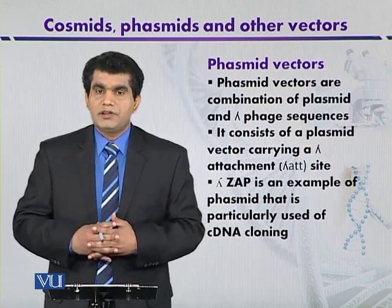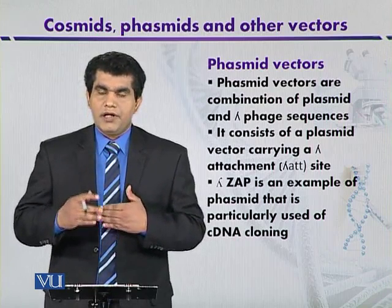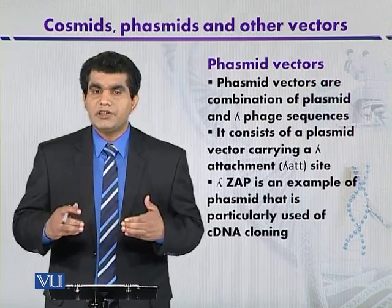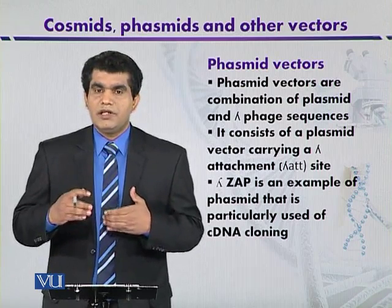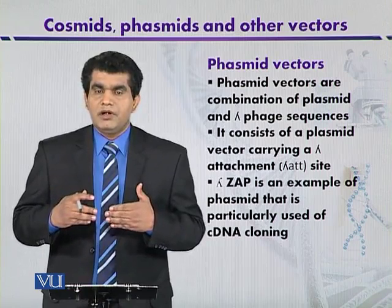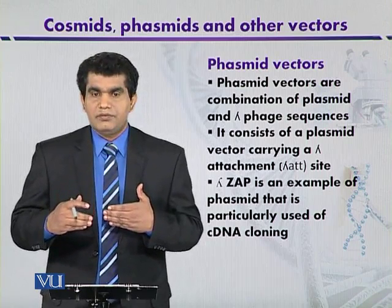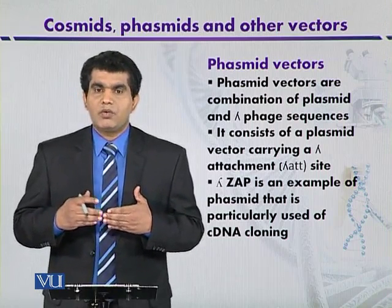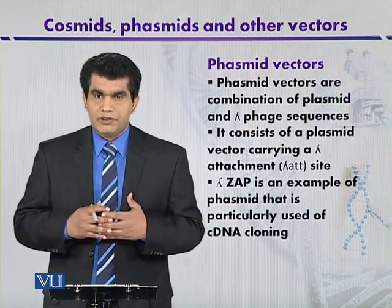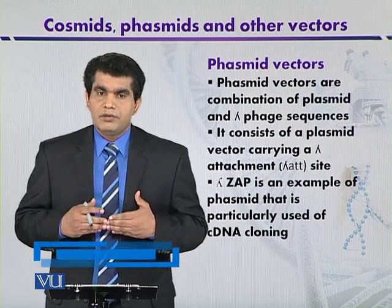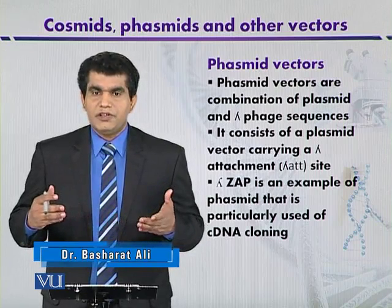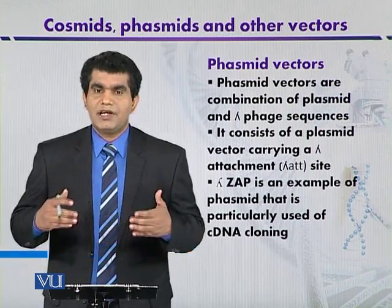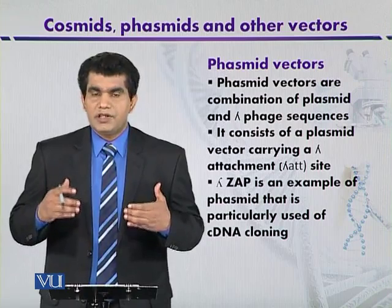Phasmid vectors can be synthesized by the insertion of plasmid DNA into the lambda genome. This insertion of the plasmid into the lambda genome occurs by the same mechanism by which the lambda genome inserts itself into the host bacterial chromosome — a process called site-specific recombination. In lysogenic bacteriophages, the lambda genome uses site-specific recombination to insert its DNA into the host bacterial chromosome.